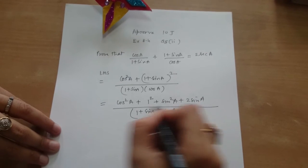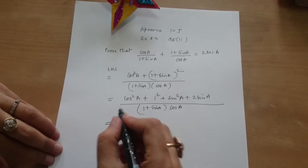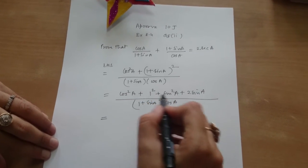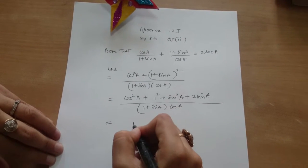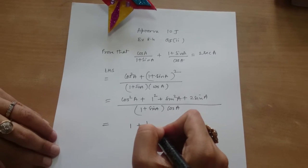Which is equal to 1 plus 1. Cos square A plus sin square A is 1. So we write 1 plus 1 square is 1.